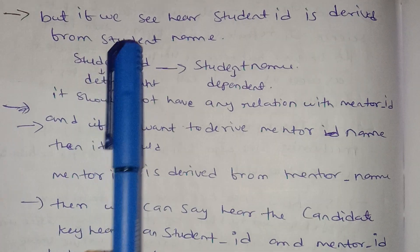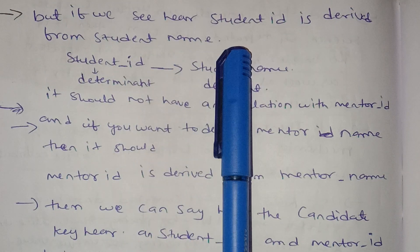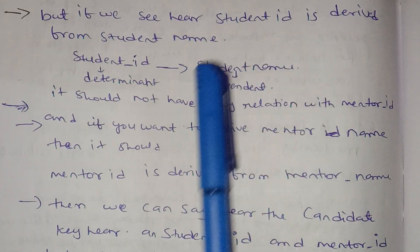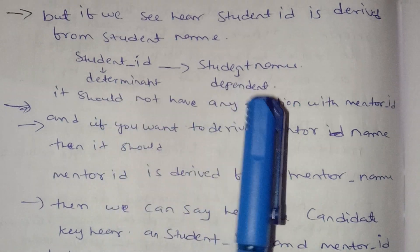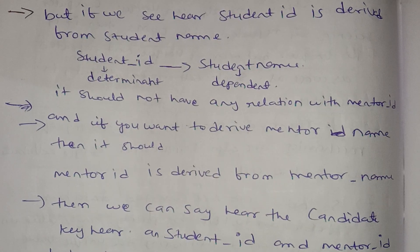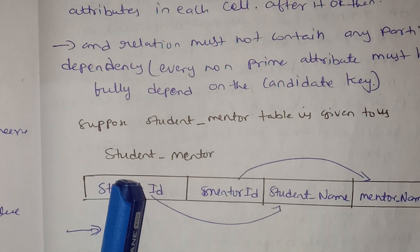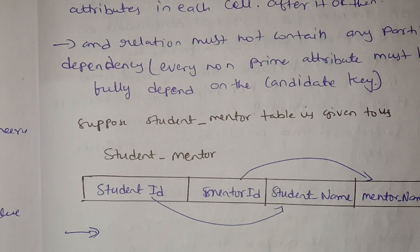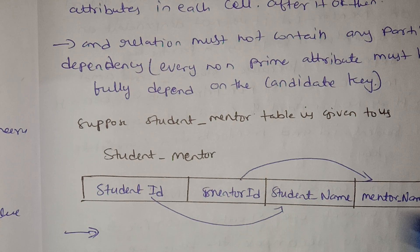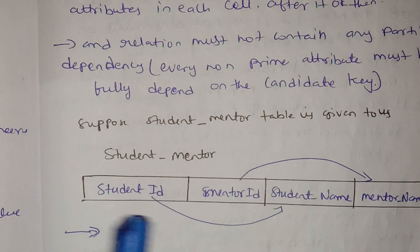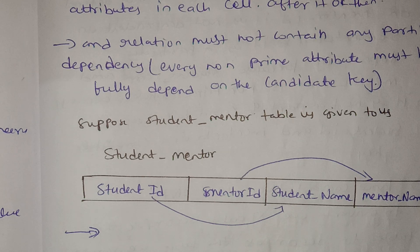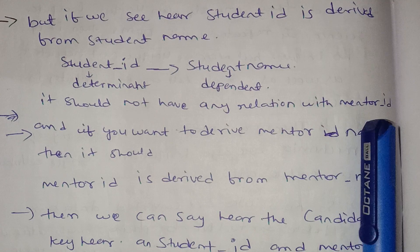If you want to know the name of a student given Student ID, Student Name is dependent on Student ID — Student ID determines Student Name. Student Name depends on Student ID and it should not have any relation with Mentor ID.